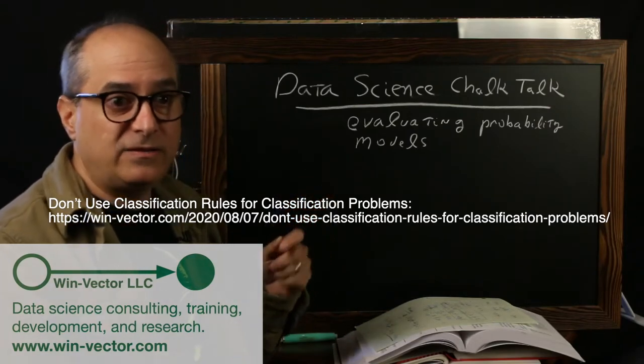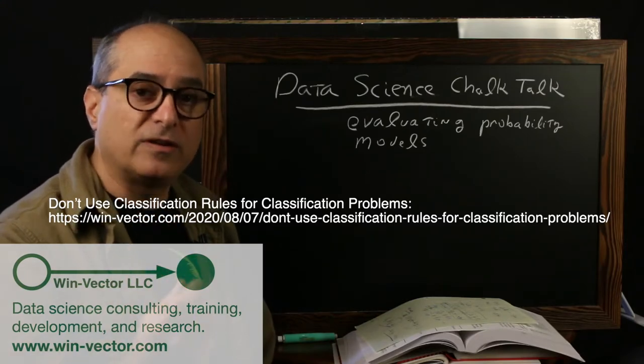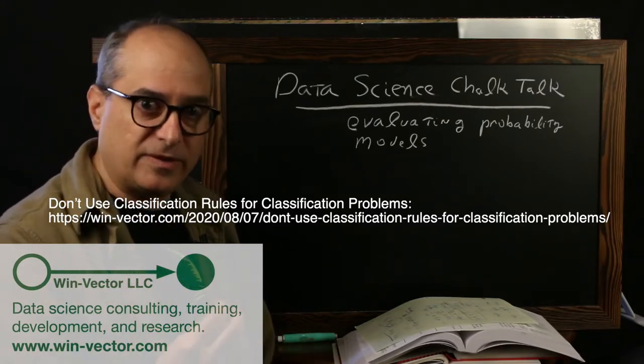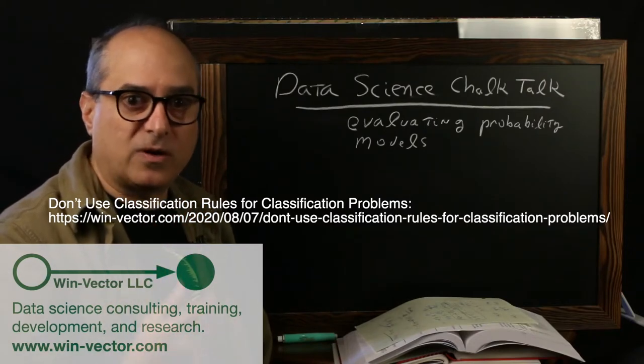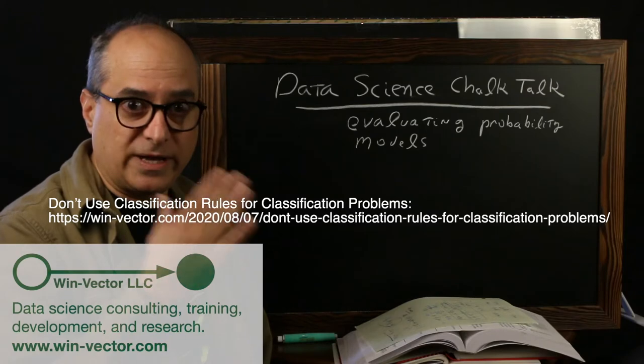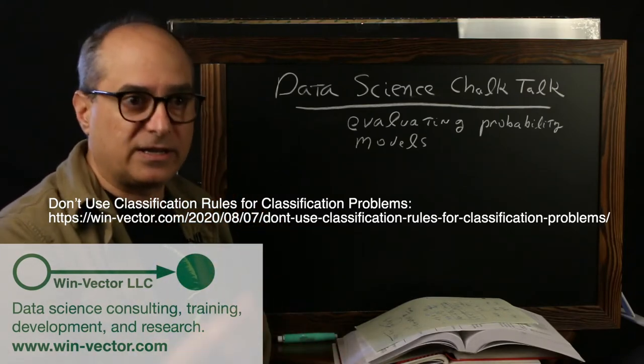This is related to our previous point that one should not use hard classification rules to solve classification problems. That is, a classification problem is where the dependent variable or quantity to be predicted is a categorical, like true, false, A, B, C, will click on ad, will not click on ad.